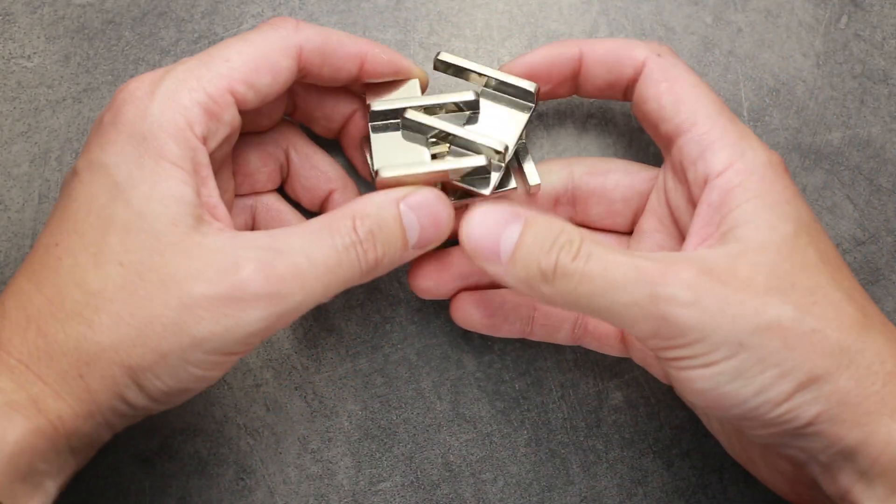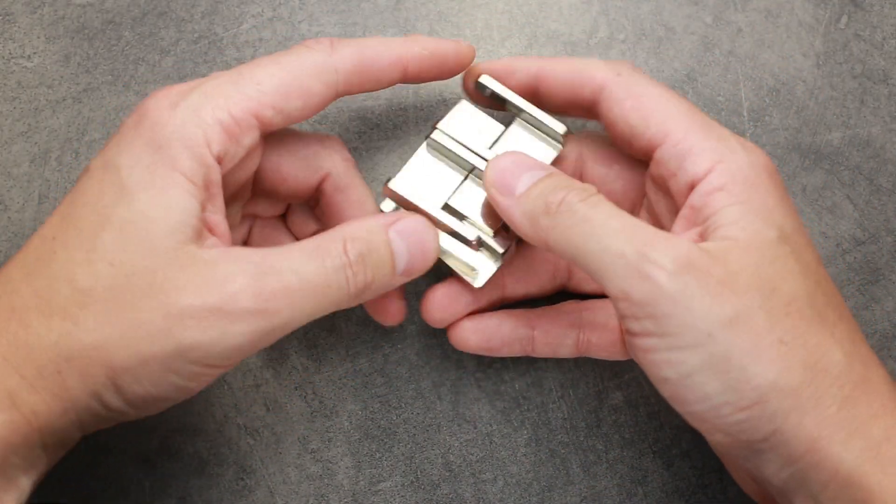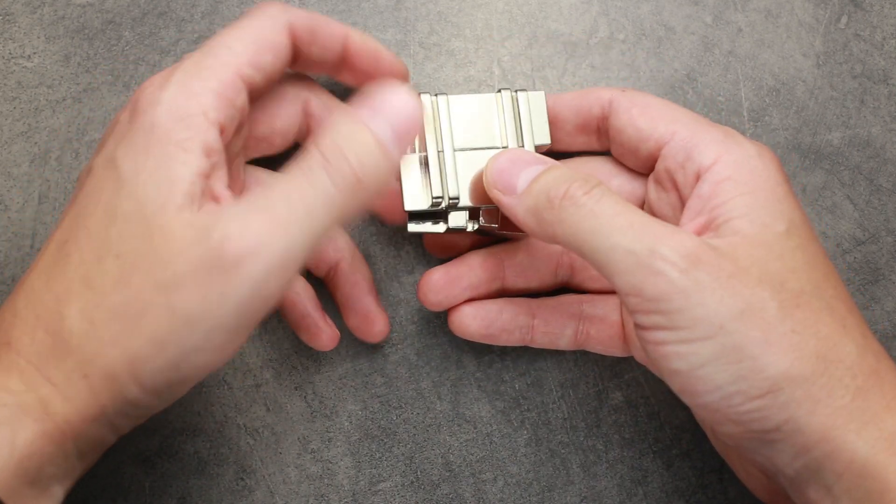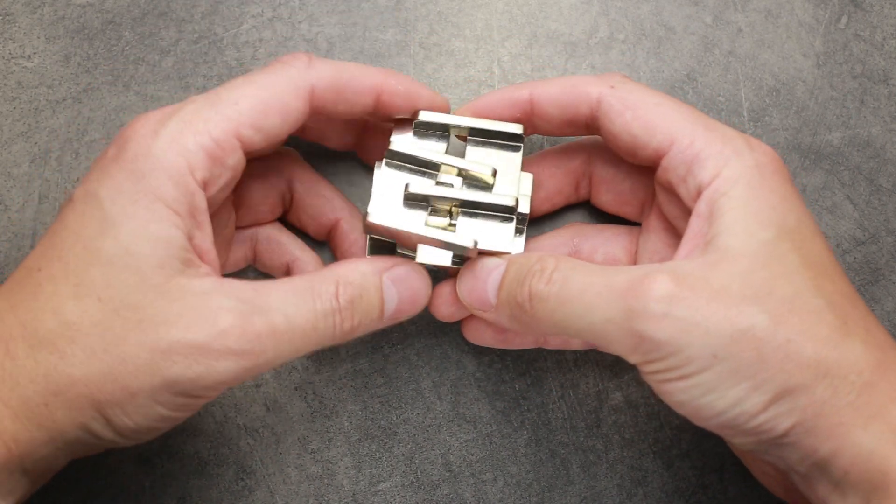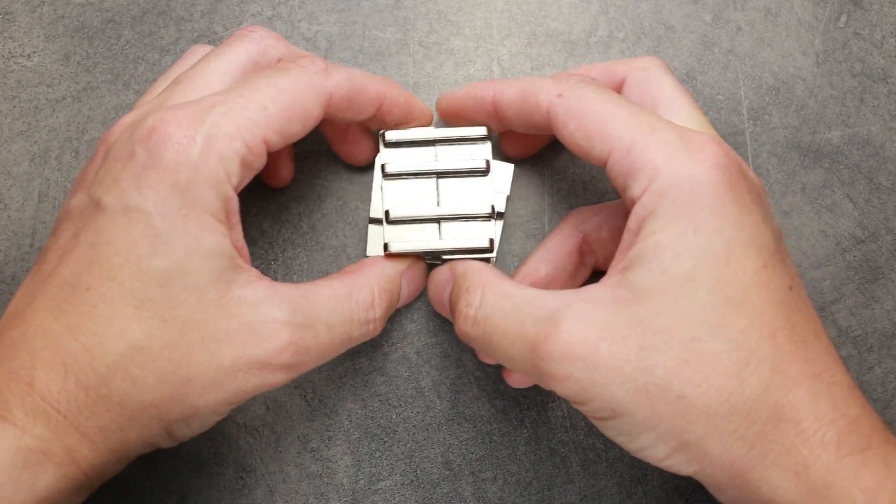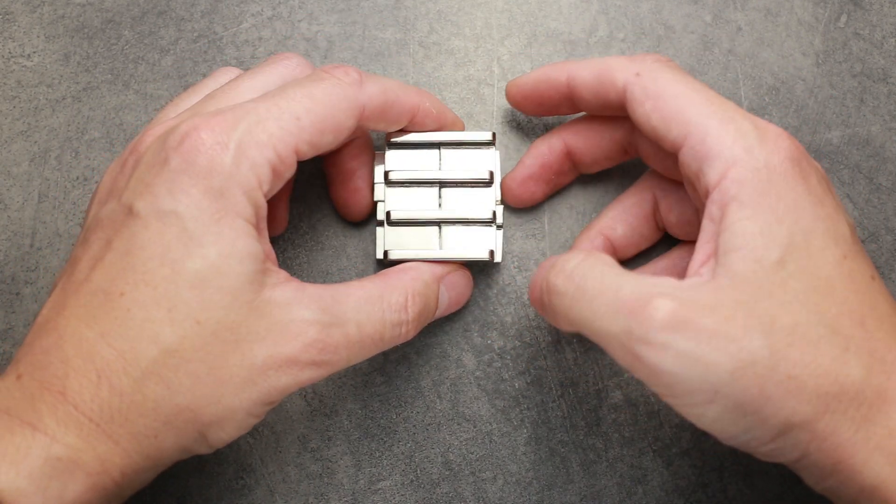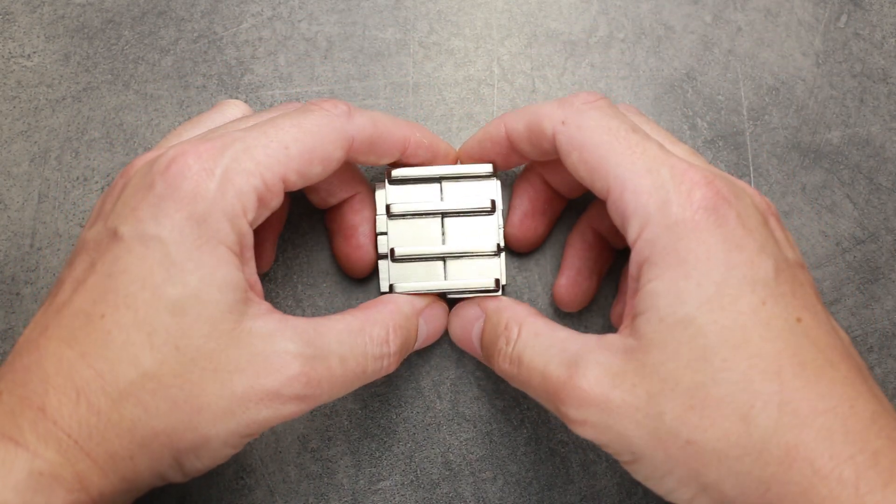As you can hear, this puzzle makes a lot of rattling noise. That's why it has its name, Rattle puzzle. And as you can see, the puzzle is made out of metal, as always with Hanayama cast puzzles.